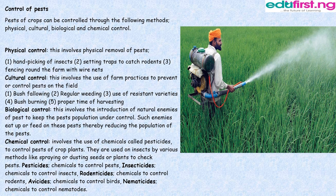Cultural control involves the use of farm practices to prevent or control pests on the field: 1. Bush fallowing. 2. Regular weeding. 3. Use of resistant varieties. 4. Bush burning. 5. Proper timing of harvesting. Biological control involves the introduction of natural enemies of pests to keep the pest population under control. Such enemies eat up or feed on the pests, thereby reducing their population.